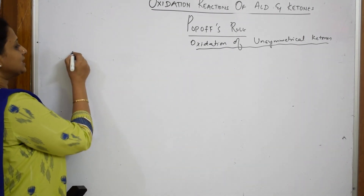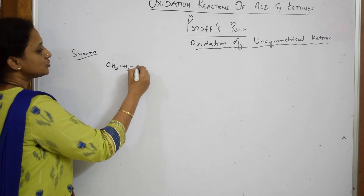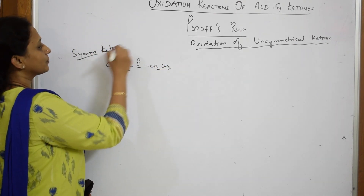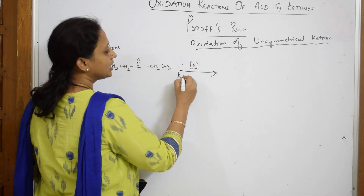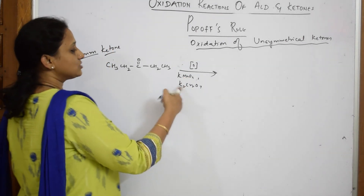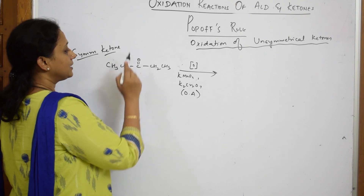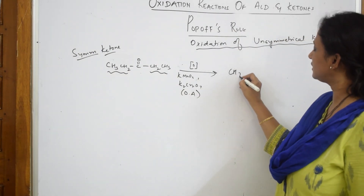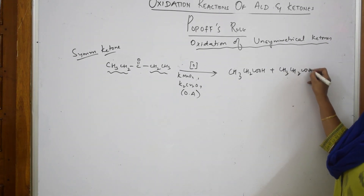What is a symmetrical ketone? For example: CH₃CH₂–C(=O)–CH₂CH₃. This is a symmetrical ketone. When we try to oxidize this in the presence of oxidizing agents like KMnO₄ or K₂Cr₂O₇, oxidation causes it to break into equal parts — both sides are symmetrical, two carbons and two carbons. So we get CH₃CH₂COOH plus CH₃CH₂COOH — symmetrical cleavage, not a problem.